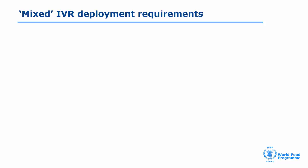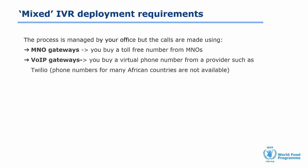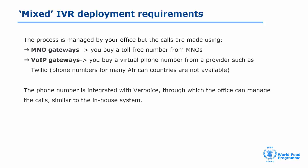Finally, let's look at mixed systems. With this term, we refer to systems where the process is managed in-house, but the calls are made using either external MNO gateways or with providers of virtual phone numbers, such as Twilio. For MNO gateways, you need to procure multiple toll-free numbers from the MNOs in the country, or procure a toll-free number shared among all MNOs. Then the MNO infrastructure needs to be integrated into Verboice. The process of procuring a toll-free number is different in each country, and in some countries it can be lengthy. For Voice over IP via IP gateways, you need to procure a virtual phone number — this can be done through online providers such as Twilio — and this virtual phone number then needs to be integrated into Verboice. The main limitation with this option is that for almost all African countries, virtual numbers are not yet available.